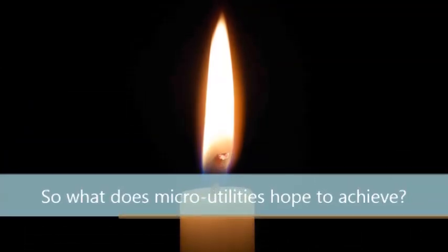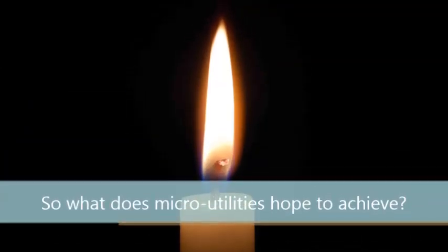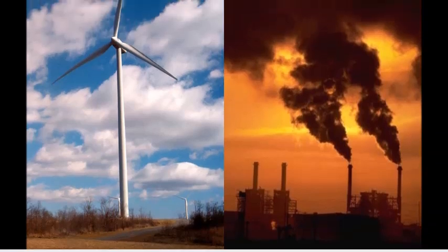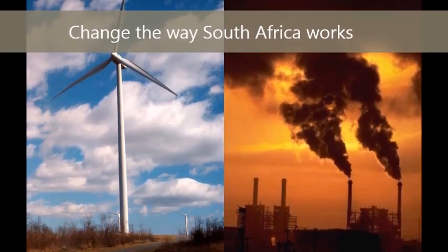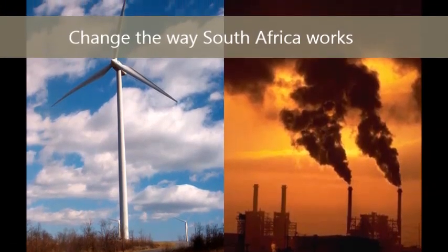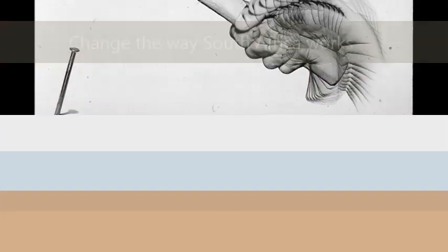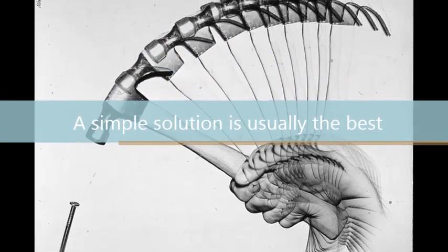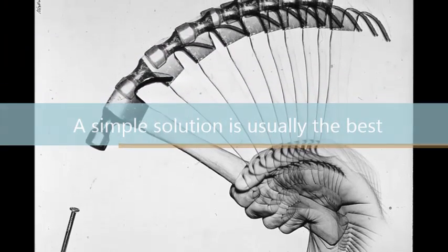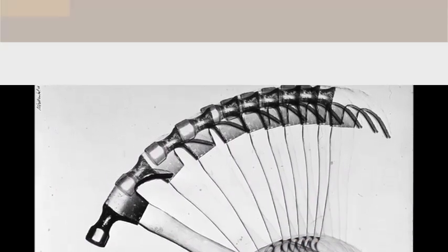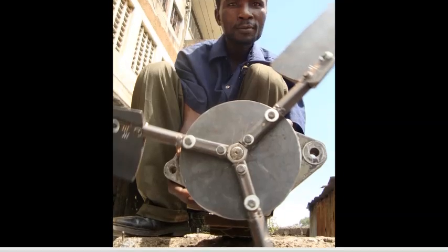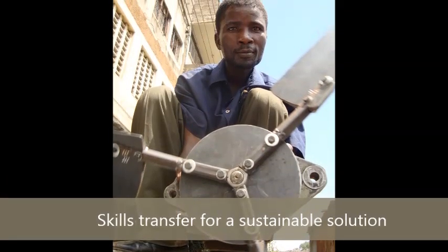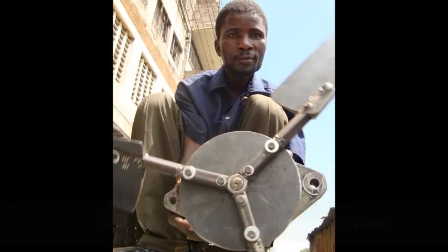By using the micro-utility electrification model, a tangible difference can be made in South Africa right away. As the famous Occam's Razor states, a simple solution is usually the best solution. With the focus being on rural communities, it is imperative that the concept be executable with minimal external interference.